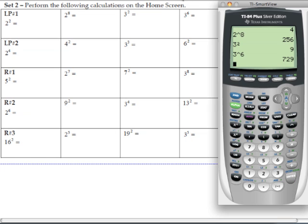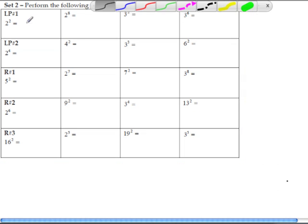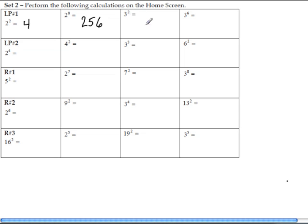So I'm going to write the answers down here. So this was 4, this was 256, 3 squared was 9, and 3 to the 6th power was 729. So go ahead and do your lesson practice number 2.